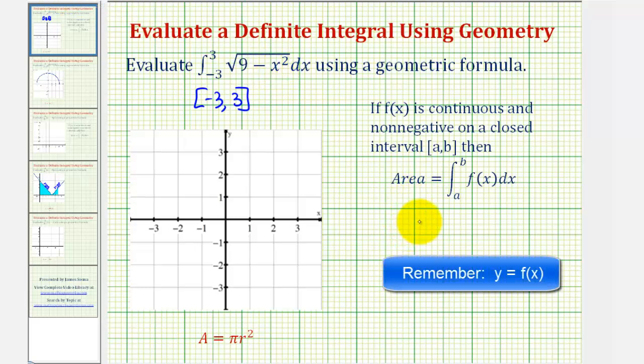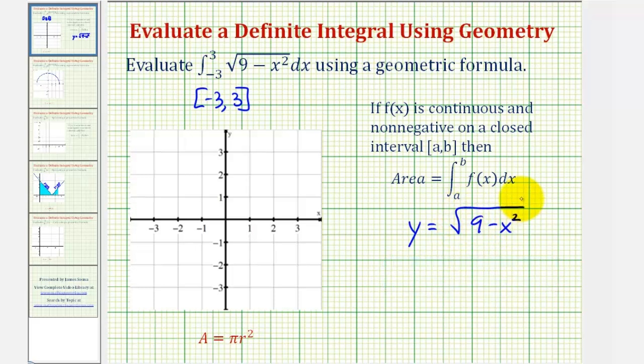Let's go ahead and say y equals the square root of nine minus x squared. The next thing we should notice is that y is going to be non-negative, and therefore the value of this definite integral will be the same as the area under this function on this closed interval.